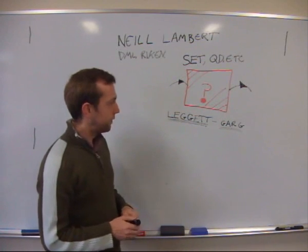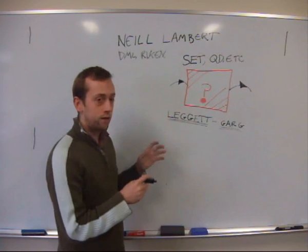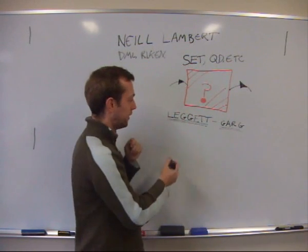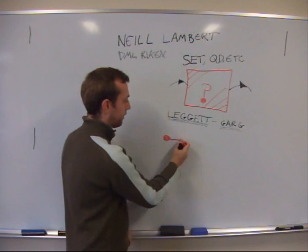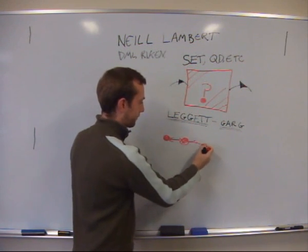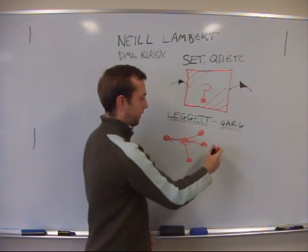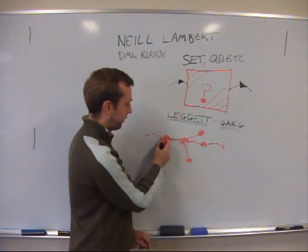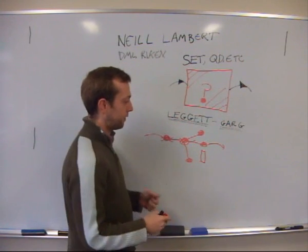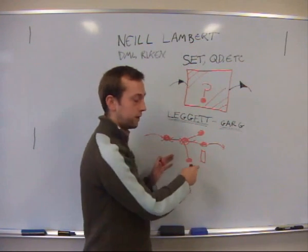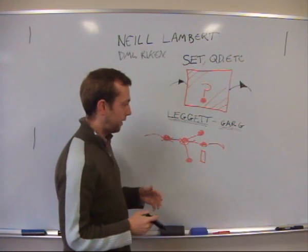We defined two types of inequalities for two different types of measurements. The first one, very similar to the Leggett-Garg case, assumes that we can measure the charge — the position of a charge inside the nanostructure. For example, if you have some series of connected quantum dots, maybe a network, a complicated network, with tunneling into the reservoirs from one side and in from the other, and if you can measure the position of a charge with a quantum point contact or some charge detector, then we defined an inequality which tells you whether the measurements in time are determined by quantum dynamics or by a classical rate equation.